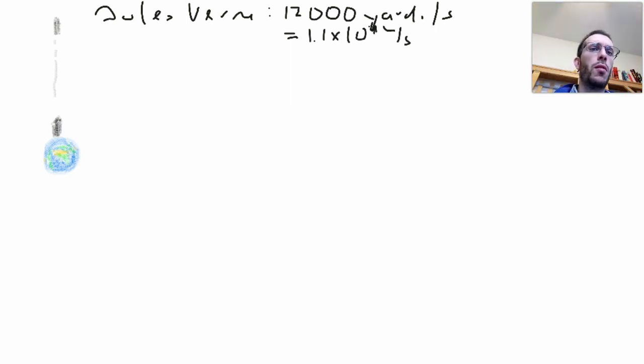Now, the question I want to be solving in this video is, is this number actually accurate? Would an object, if I shoot it upwards with 1.1 times 10 to the 4 meters per second, as Jules Verne predict, not come back down, but actually go all the way to the moon or beyond?